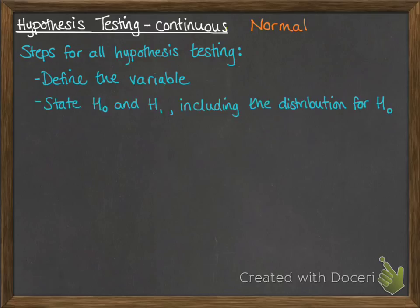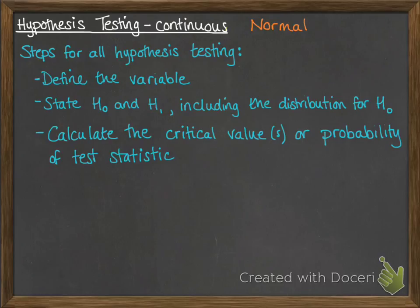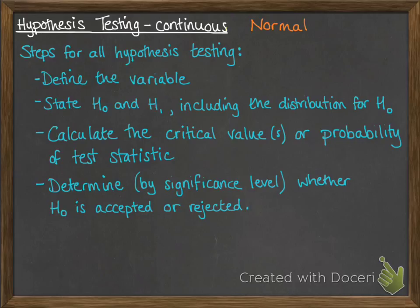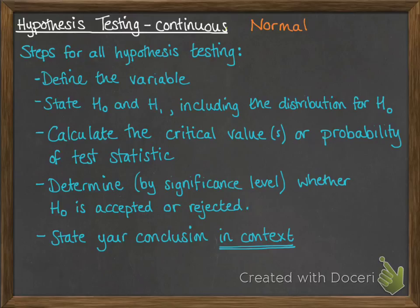you need to define your variable, state your null hypothesis and alternative hypothesis, and you'll include what the distribution would be if your null hypothesis was correct. You're then going to calculate the critical value or values, or the probability of a test statistic happening. And then you'll determine from the significance level whether the null hypothesis is accepted or rejected. And finally, you will state your conclusion as a sentence in context.